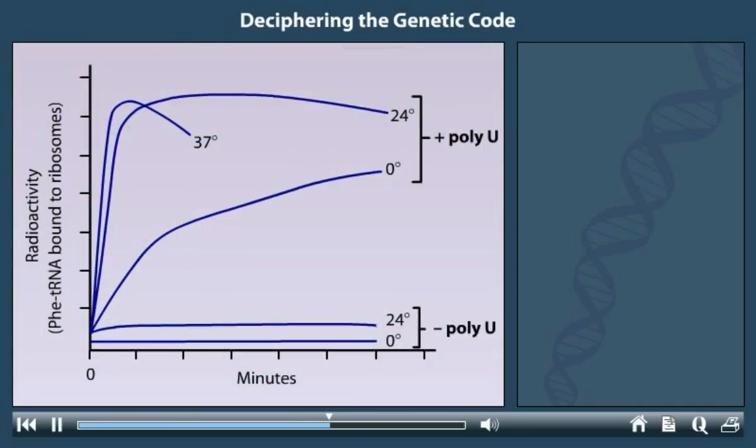Nirenberg and Leder reported their results in graph form. At a variety of temperatures, poly-U produced a positive reaction. In the absence of poly-U, there was virtually no reaction regardless of the temperature tested.